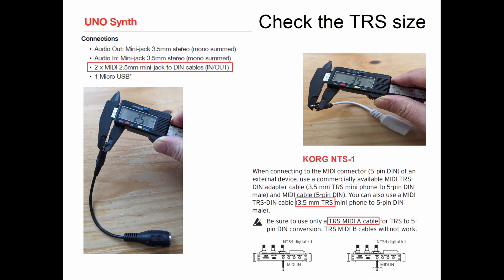Not only is it a Type A and Type B, but you also need to keep in mind the size of the TRS, because you commonly see a 3.5mm, but there also exist 2.5mm and 1.25-inch TRS adapters to 5-pin DIN MIDI.